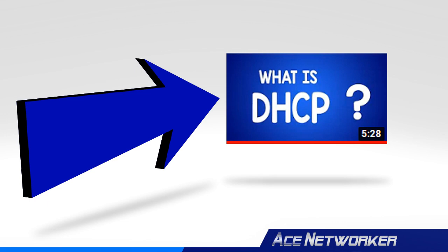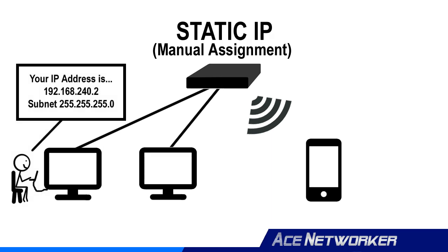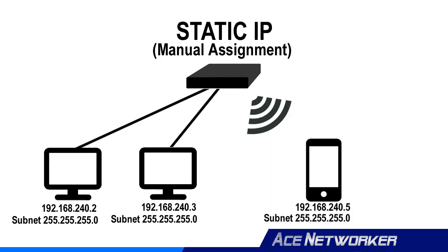Here's the short and simple of these two terms. If you manually go into the operating system on each client and tell it what IP address and subnet mask it's going to have on its network card settings, and you manually tell it what the default gateway IP address is on the network, you are doing what's called static IP assignment. In other words, you tell that device or computer what its IP address, subnet mask, and default gateway IP address are, and it only uses those settings.